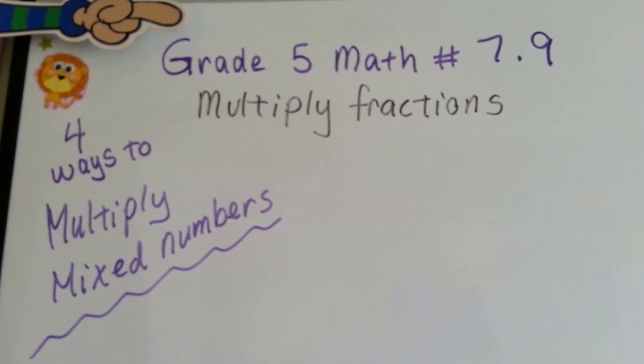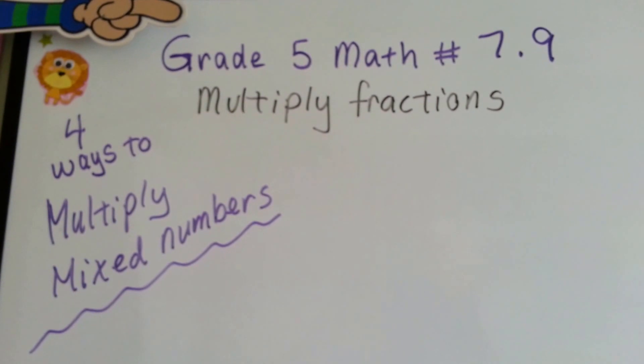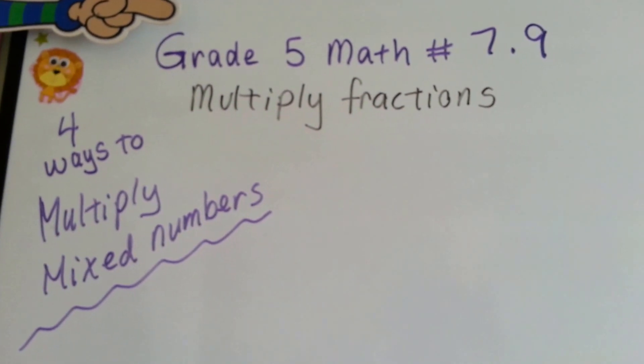Grade 5 math, number 7.9, Four Ways to Multiply Mixed Numbers.